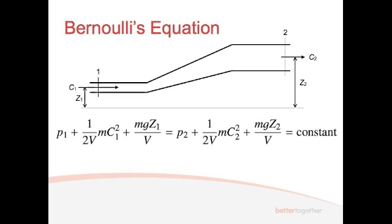And so we end up getting P1 with V is gone because we've divided it by V. Okay, well there we go, that's fine. Then we've got 1 over 2V times mc1 squared. mgz over V and the same for side 2 and that will equal the constant.